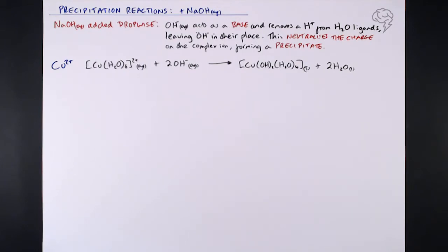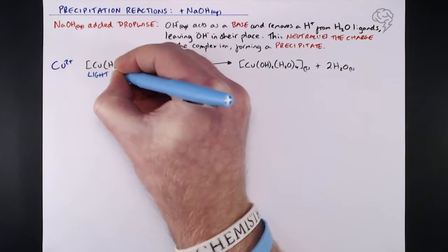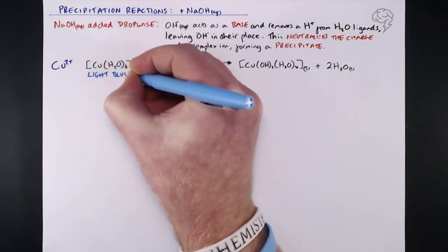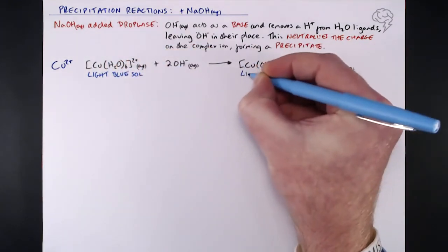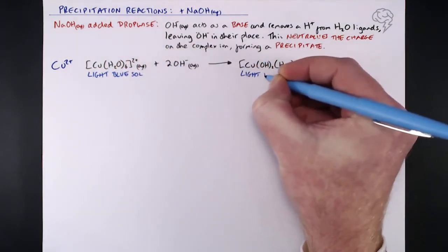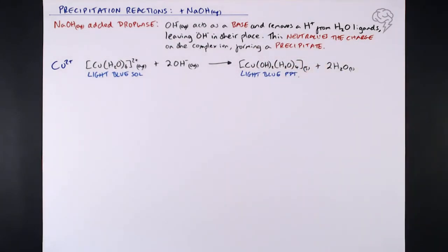Color change for this one? Well, no real color change per se, but we start with a light blue solution and we end up with a light blue precipitate. It's a significant change because you're forming a precipitate, but no real color change to speak of here. So that's copper — nice and straightforward.